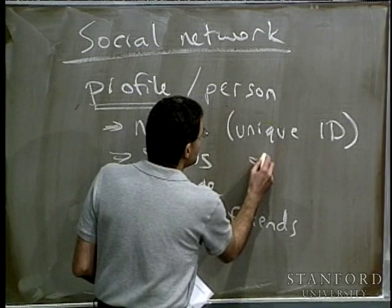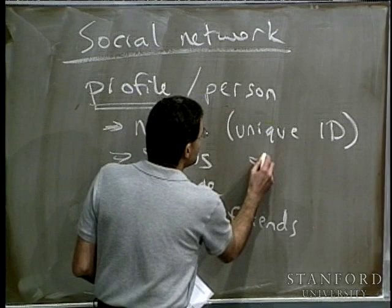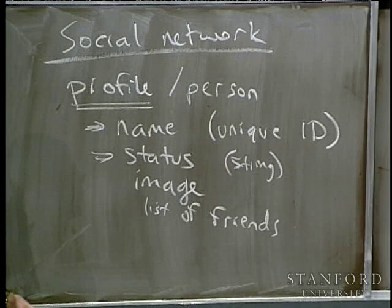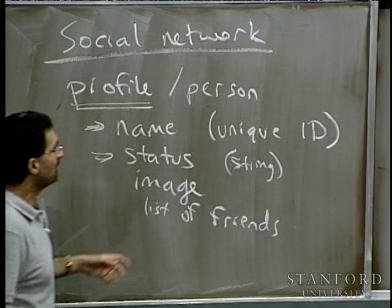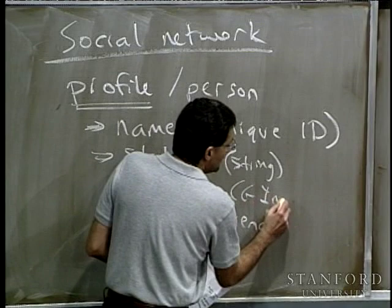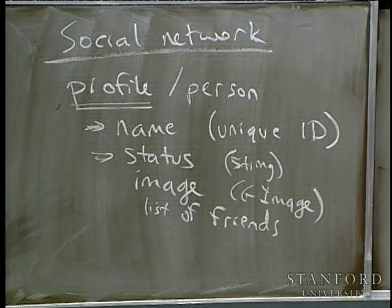Status is just kind of like what you're doing right now — just some string of what you happen to be up to at the time. Like 'Mehran is teaching' or 'Ben is contemplating life.' You might want to change this a fair bit. The image is just a GImage — some picture. Initially when you create a profile you may not have a status and you may not have an image, but you may want to add or change one as life goes on.